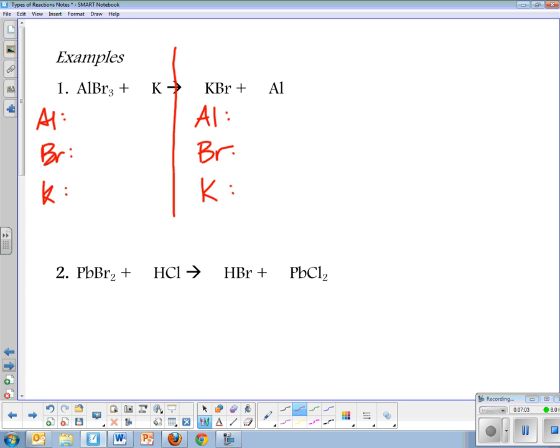Now I want to write down how many I have of each. Aluminum, if I look up in my formula, there's only one aluminum. There are three bromines here. And there's one potassium. On the product side, I have one aluminum, one bromine, and one potassium because they don't have any subscripts. The reason I wrote them in the same order is I can see, do they match up? Yeah, those do. My aluminum is balanced. I have one of each. My bromine, however, is not. And my potassium is. So bromine is what doesn't work out.